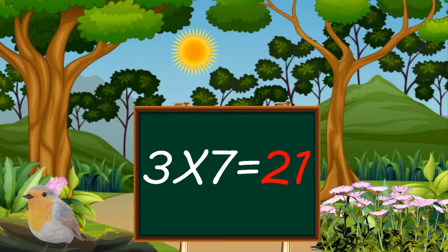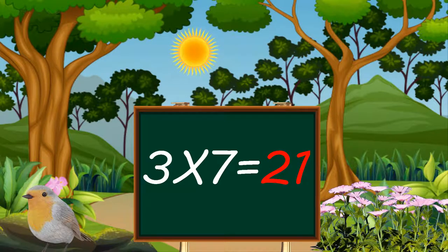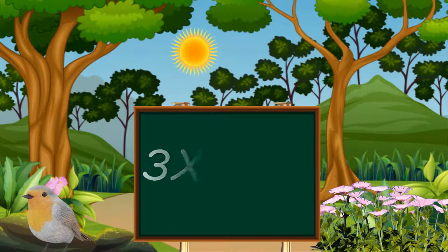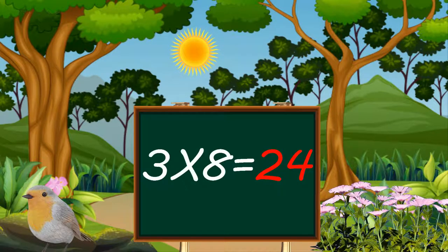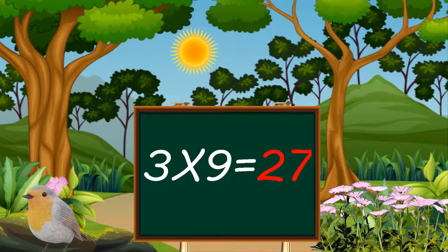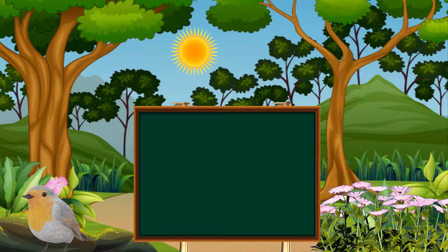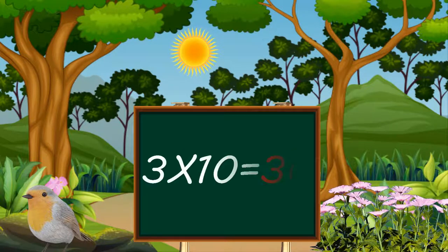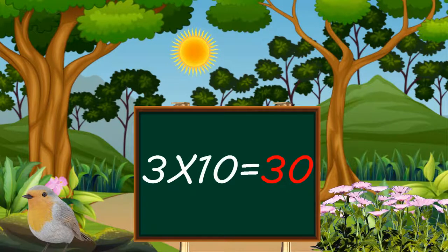Three sevens are twenty-one. Three eights are twenty-four. Three nines are twenty-seven. Three tens are thirty.